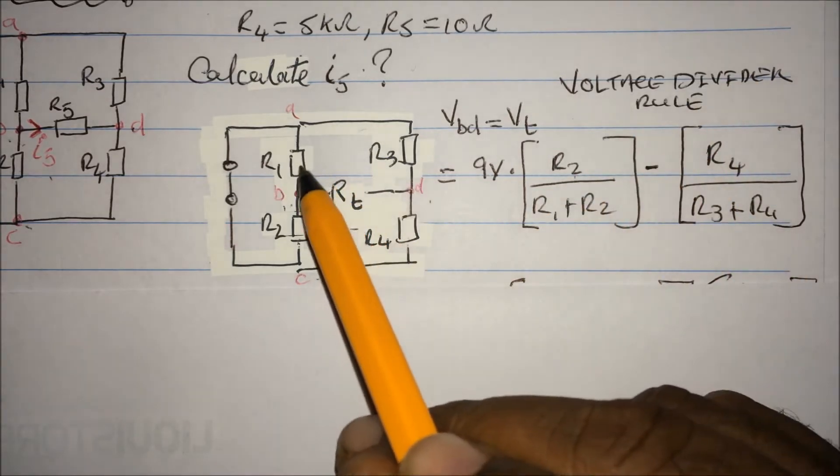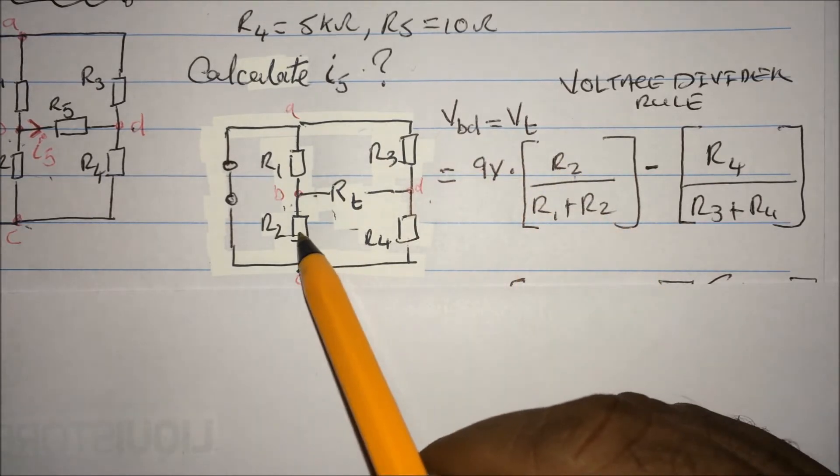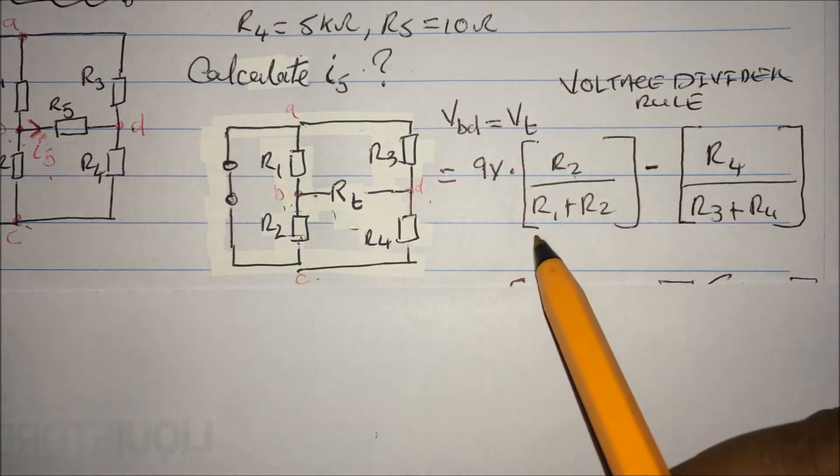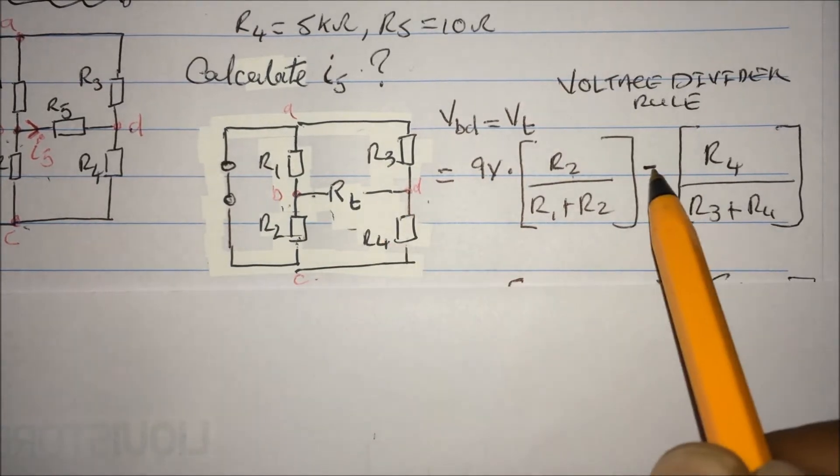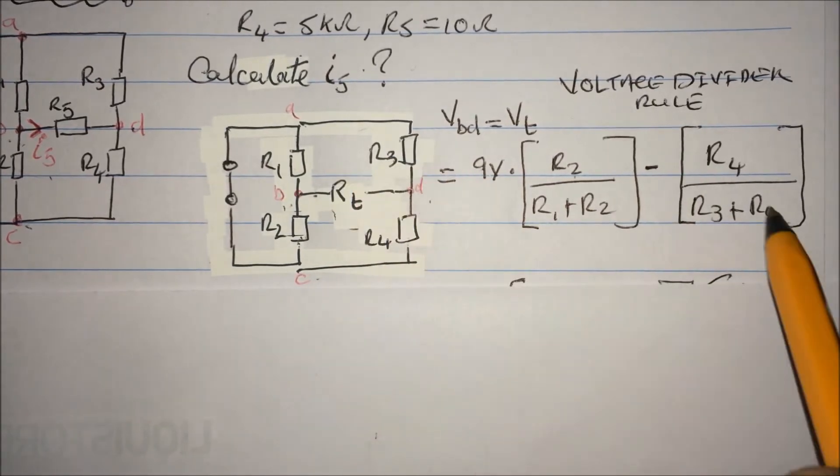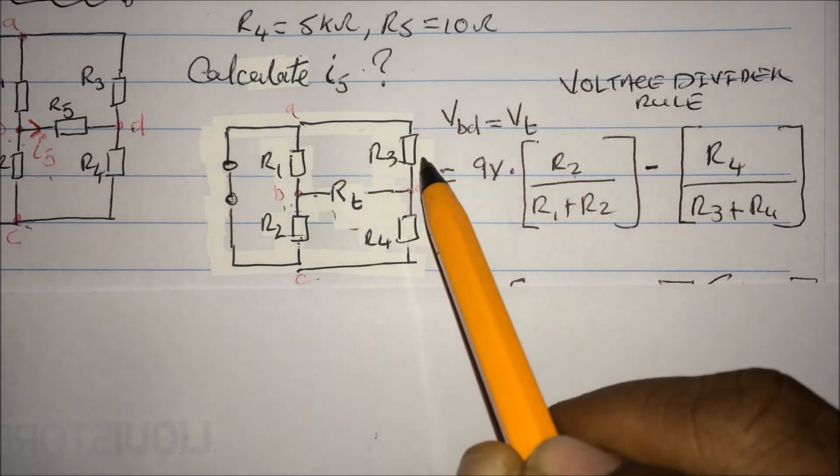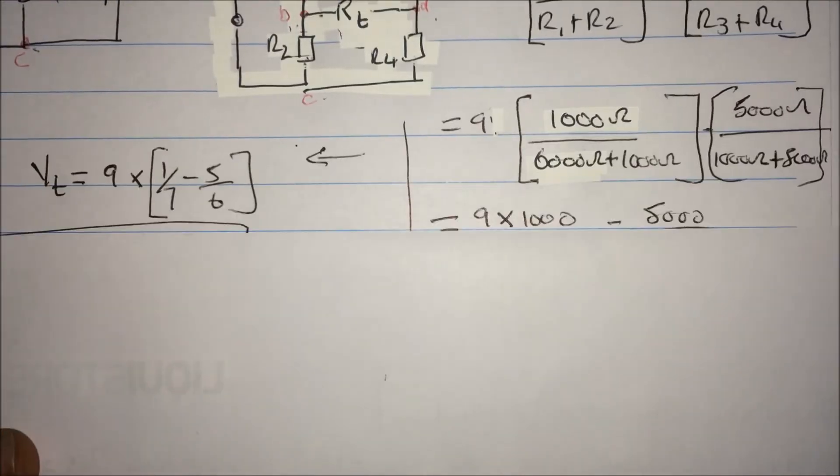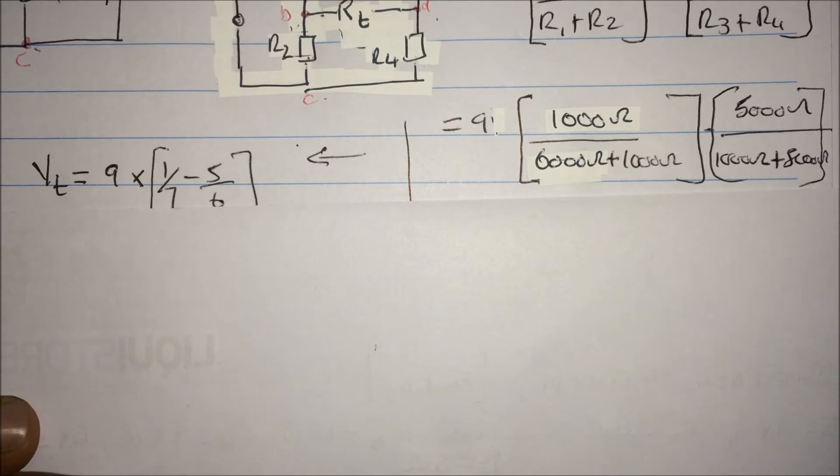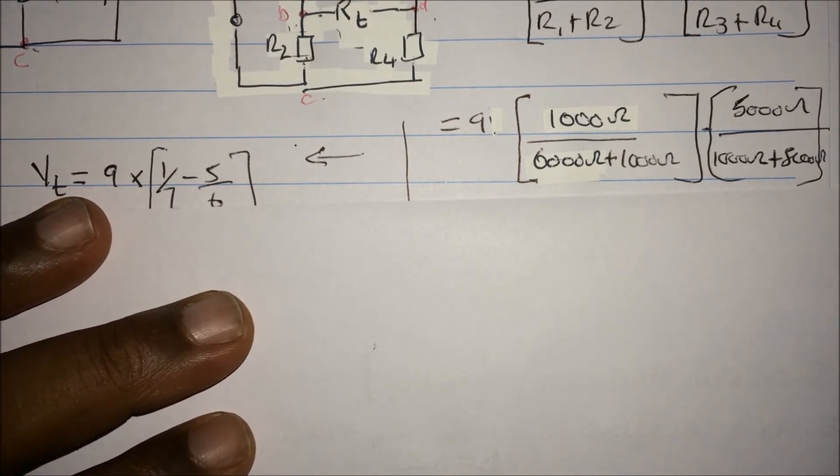According to the voltage divider, if you want to find voltage in this range, it's saying that R2 which is sitting there, R1 plus R2 minus R4 actually, R3 plus R4. Alright, so when we put the numbers in there, that's what I got.